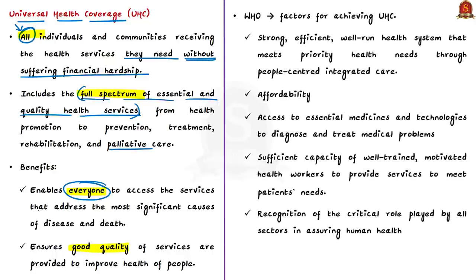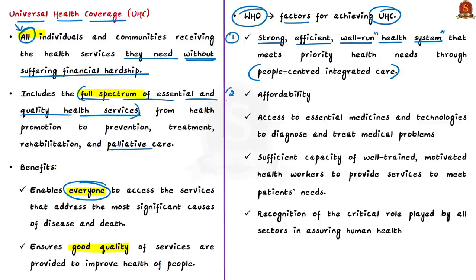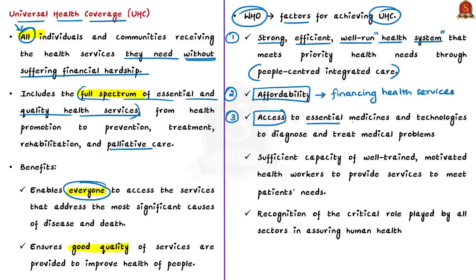According to WHO, for a community or country to achieve universal health coverage, certain factors must be in place. Firstly, there should be a strong, efficient and well-run health system which meets priority health needs through people-centred integrated care. Second is affordability — there should be a system for financing health services, which can be achieved through government providing services for free, government schemes, insurance or other ways of financial support. Thirdly, there should be access to essential medicines and technologies to diagnose and treat medical problems. Fourthly, there should be a sufficient capacity of well-trained motivated health workers.